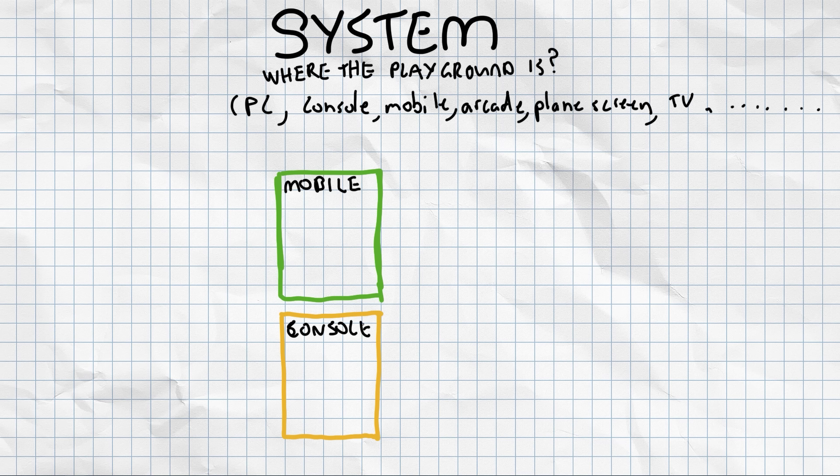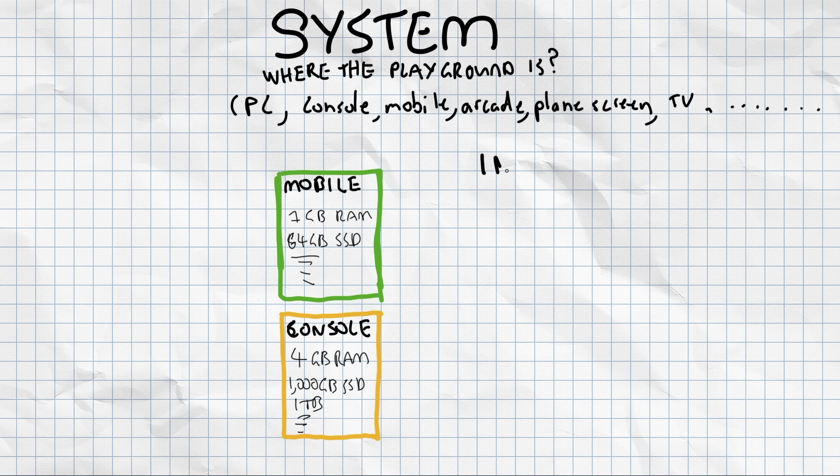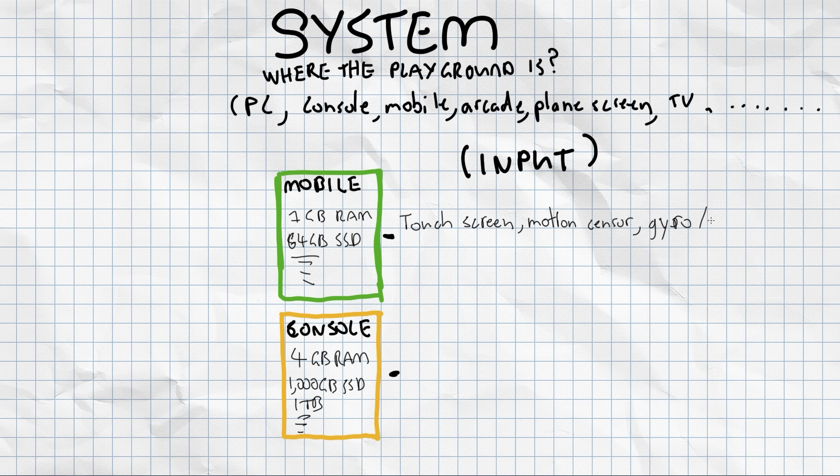We'll start with a mobile and then a console. So these are very different devices. One, let's say, has 1GB RAM and like a 64GB hard drive. And then console would have 4GB RAM and a way bigger hard drive at a terabyte. So you have different limitations of what you can actually create in these systems. But then they also have totally different inputs. A mobile is played with a touchscreen typically. But then you also have things like motion sensors, accelerometers, the gyroscope, all sorts of stuff.